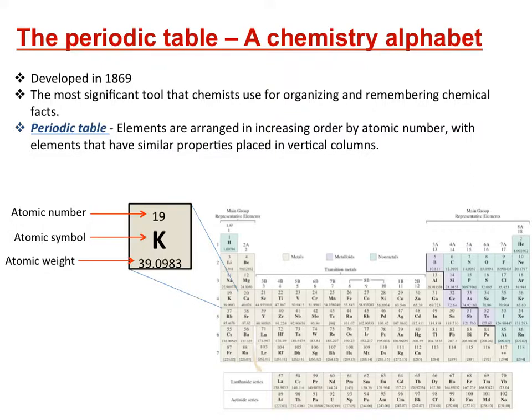When we look at a single element on the periodic table, we're given some information. We're given the symbol of the element, here K for potassium, and directly above it the atomic number. The atomic number is the number of protons, and for a neutral atom also equals the number of electrons. Below that we have the atomic weight or mass number, which equals the number of protons plus the number of neutrons.